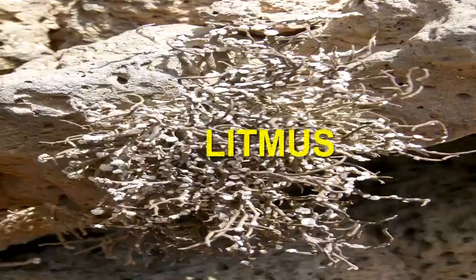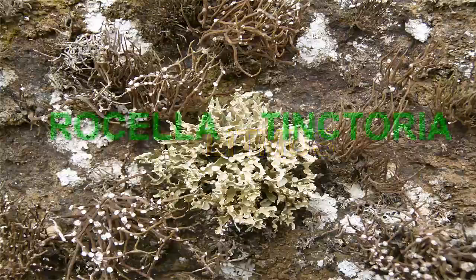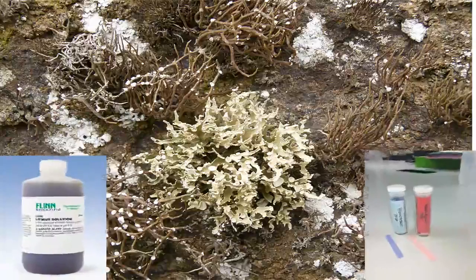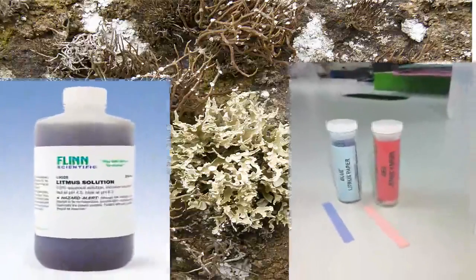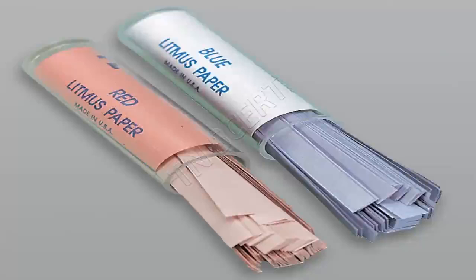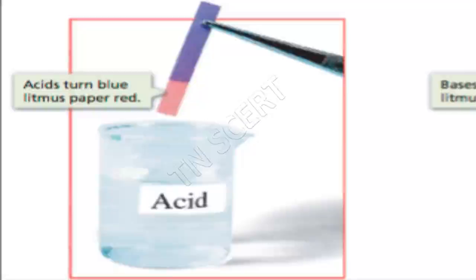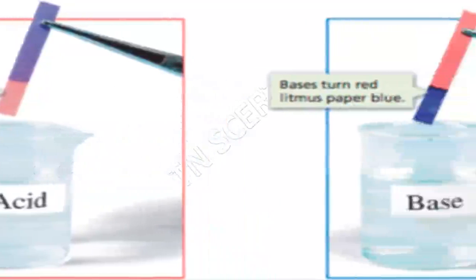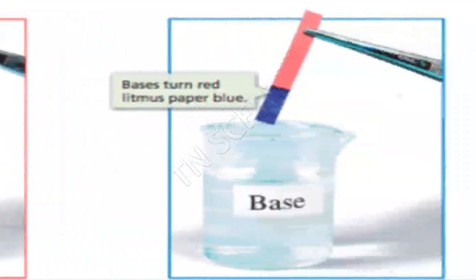Litmus is a natural indicator extracted from lichens, mainly Rocella tinctoria. It is available in the form of solution or paper strips. Litmus papers are red or blue in color. Blue litmus paper turns red in acidic solution, and red litmus paper turns blue in basic solution.